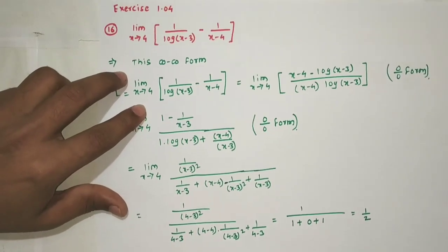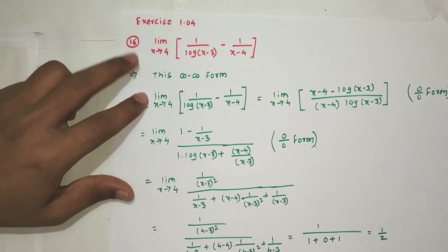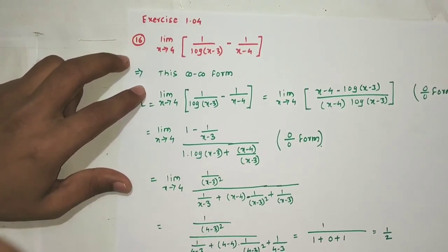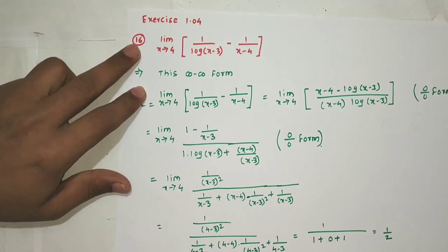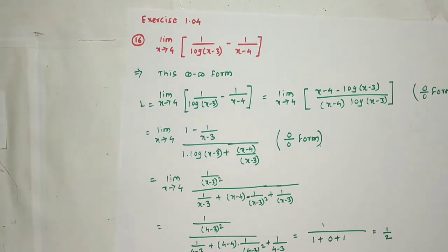The next problem is from exercise 1.04, example number 16, which was asked in a previous exam: limit x tending to 4 of [1/log(x-3) - 1/(x-4)].